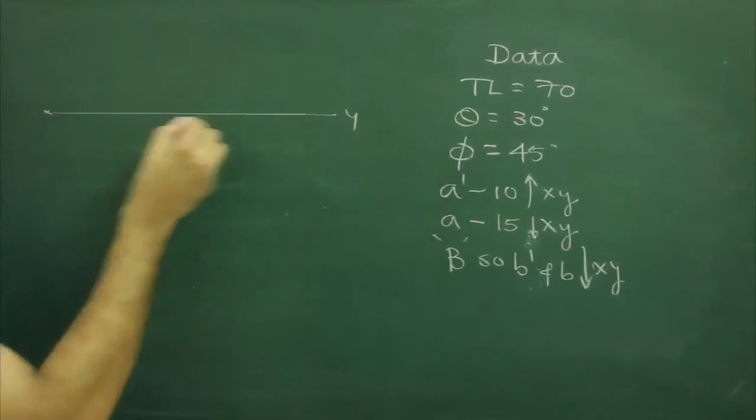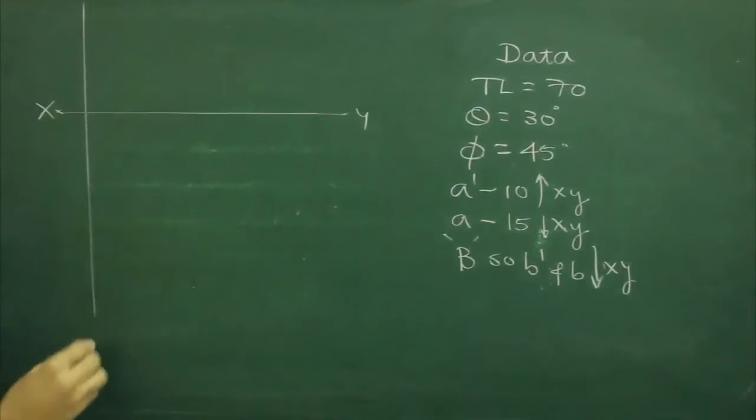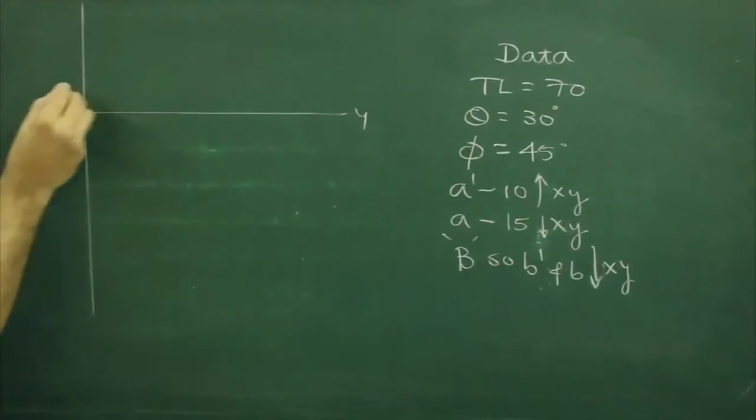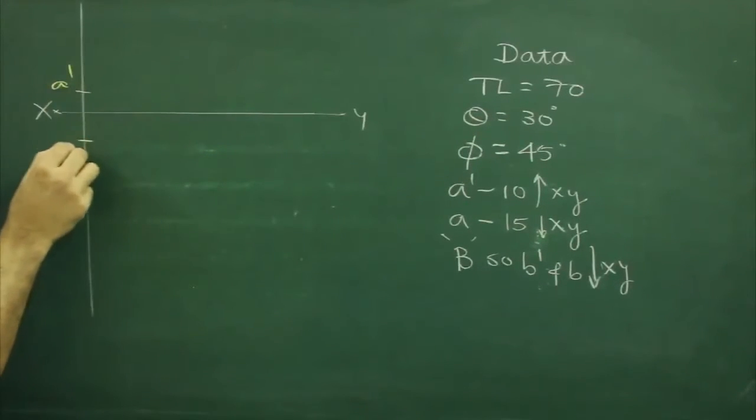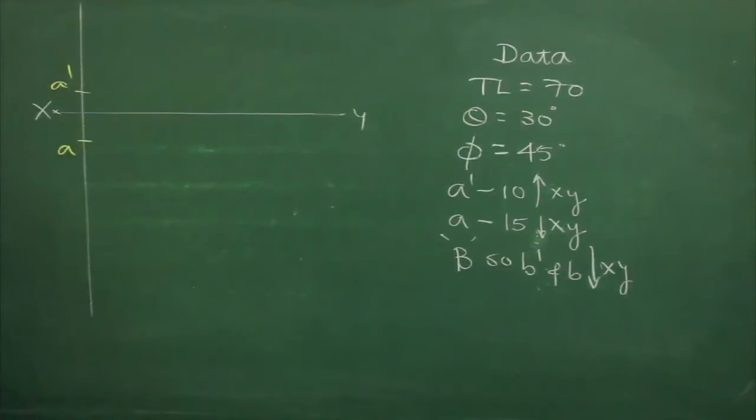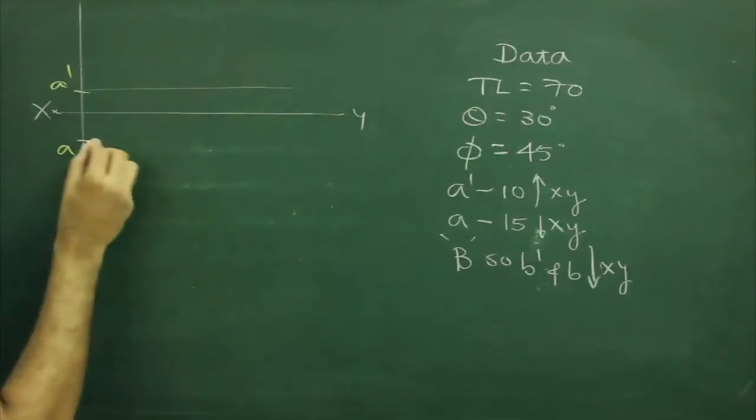First we will draw xy line and we will mark a dash and a. Now we have theta and phi.